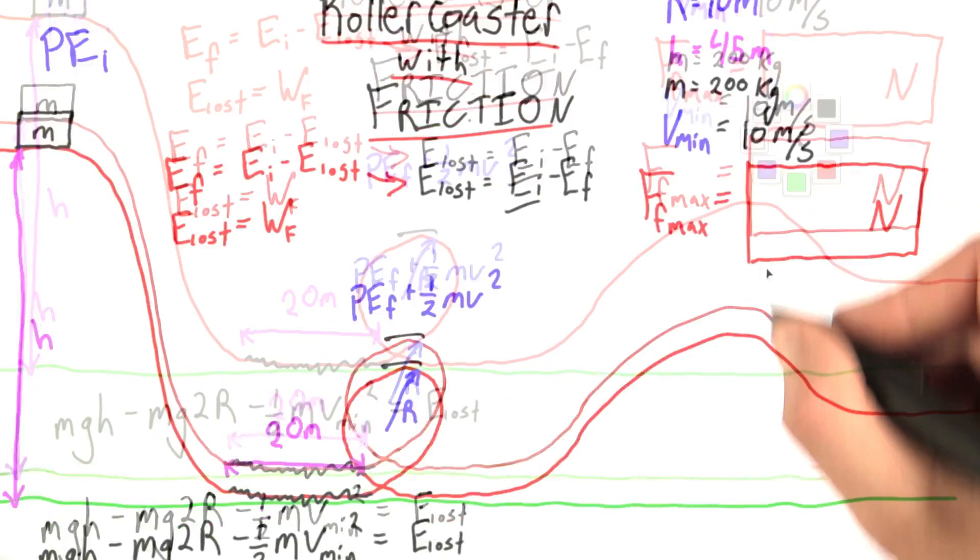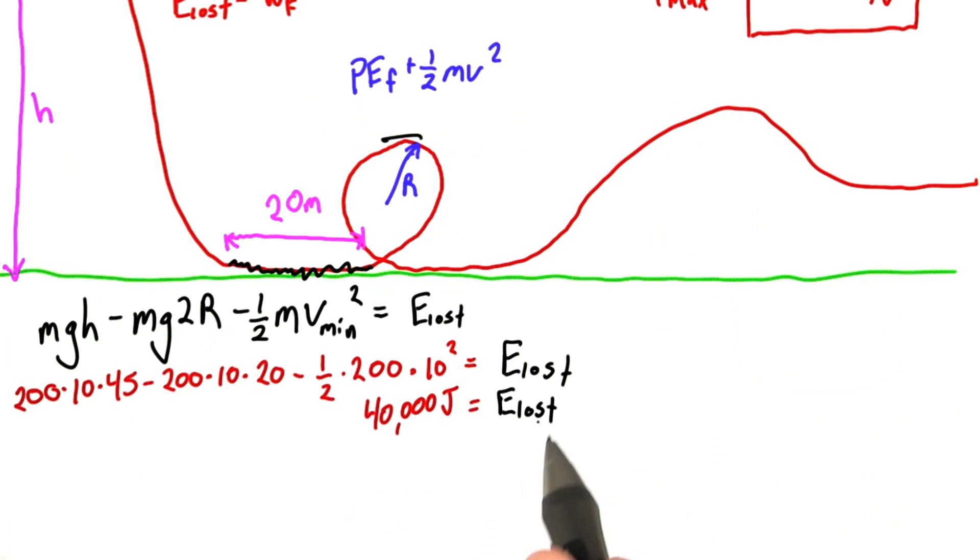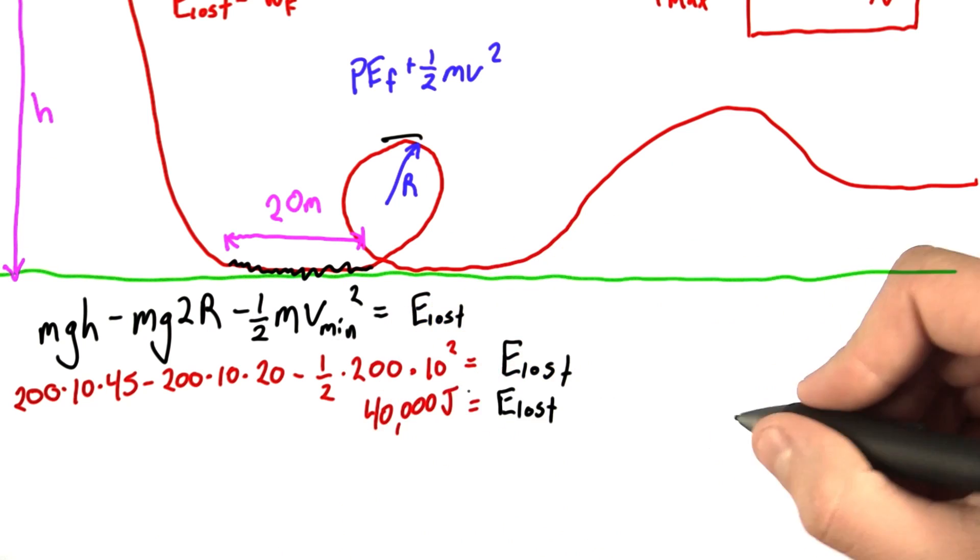I can plug in my known values from up here, and I find that the energy lost is equal to 40,000 joules. And how is that energy getting lost? Well, friction is doing work.